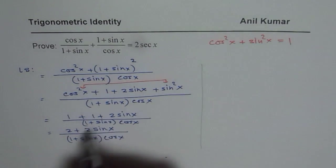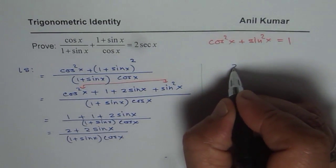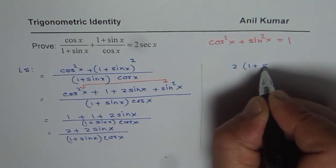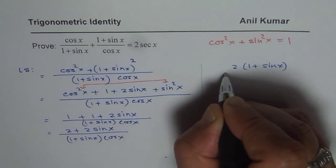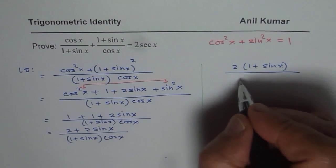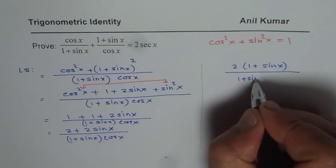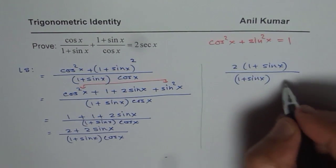We could write this as, now we can take 2 common. So once I take 2 common, I get 2 times 1 plus sin x in the numerator divided by 1 plus sin x times cos x.